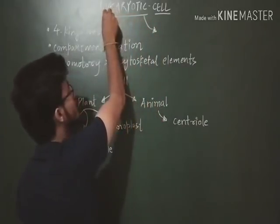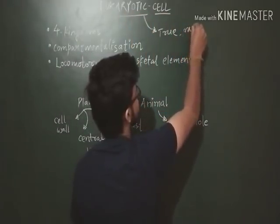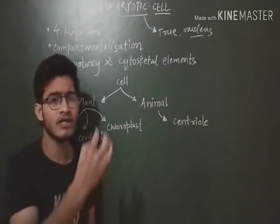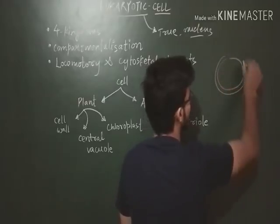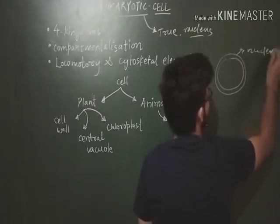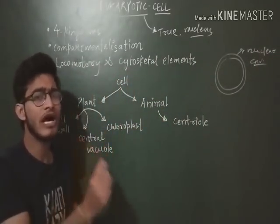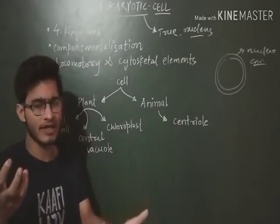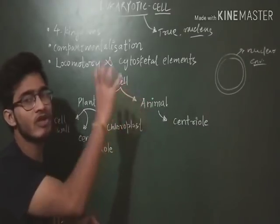What are eukaryotic cells? 'Eu' means true and 'karyon' means nucleus. The nucleus is well developed in eukaryotic organisms and it is surrounded by a nuclear envelope. The nuclear envelope was absent in prokaryotic organisms — 'pro' means primitive and 'karyon' means nucleus — so they do not have a well-developed nucleus and the nuclear envelope is absent.